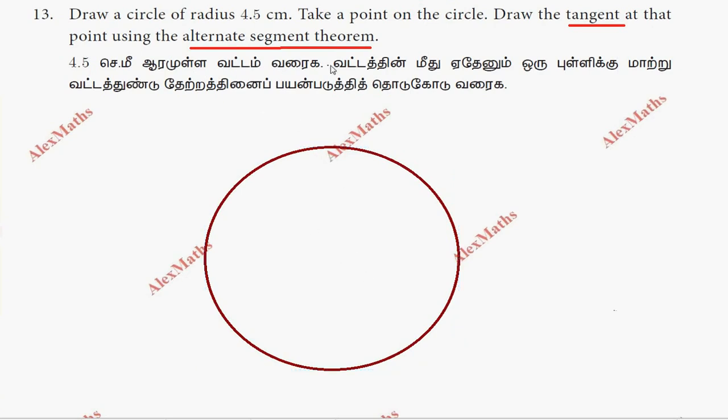We draw the radius line. The center is O. Point A is chosen on the circle.